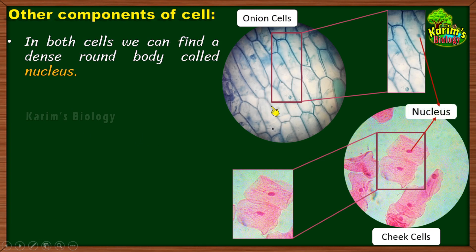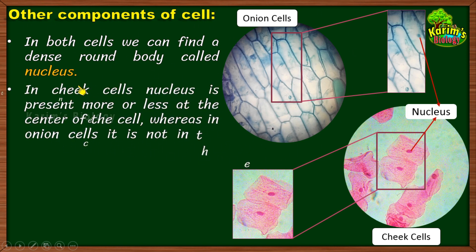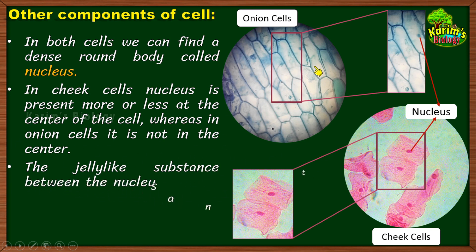Now let us talk about another part called the nucleus. At the beginning of the session I asked you about a darkly stained structure at the middle of almost every cell. In both cells we can find a dense round body. This dense round body found in every cell is called the nucleus, and it is a very important part of the cell. There is a difference in the location of the nucleus: in cheek cells the nucleus is present more or less at the center, but in onion cells it is not at the center — most onion cells have the nucleus at the periphery or towards one side.